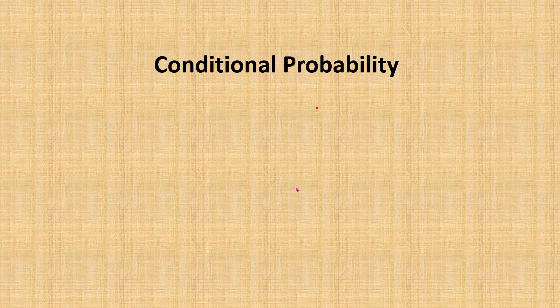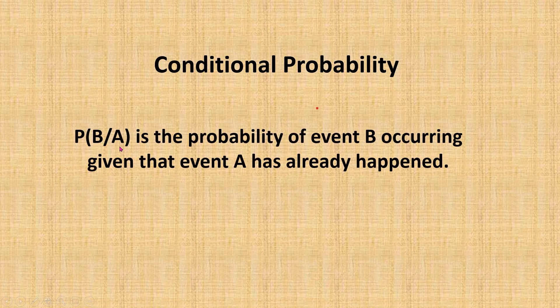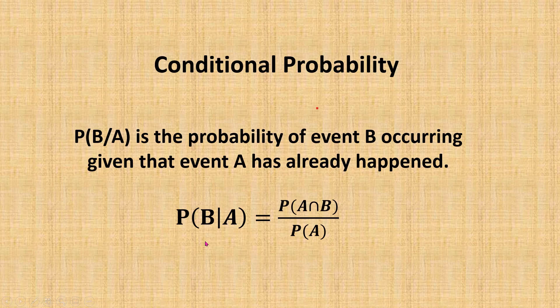In this video, I'm going to talk about conditional probability. Conditional probability can be denoted as P(B|A). P(B|A) means the probability of event B occurring given that event A has already happened. The formula for the probability of P(B|A) is equal to the probability of A intersect B divided by the probability of A.